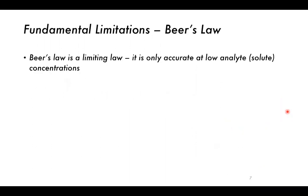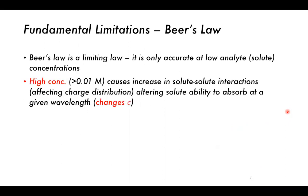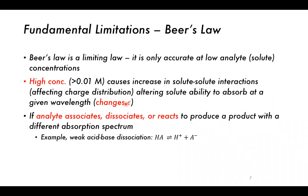At high concentrations, molecules in a ground state are excited by absorption of light to a higher energy excited state, but if there are many analyte molecules around they can interact with each other, changing those energy levels and thus the wavelength at which the different particles absorb. This alters the ability to absorb at a given wavelength and changes the epsilon value, the molar extinction coefficient. If an analyte associates, dissociates, or reacts to produce a product with a different absorption spectrum, we also get deviations from Beer's Law.